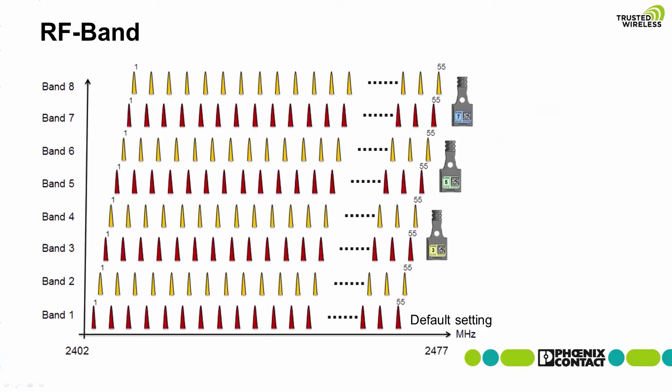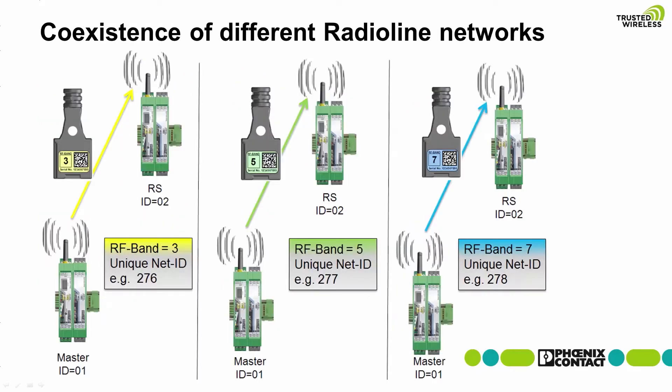An RF band is a group of frequencies that communicates over the entire wireless band. Different RF bands use different groups of frequencies. With the SciConf software, up to eight RF bands can be set. In the 2.4 gigahertz band, there are three different ConfSticks with different RF bands available.